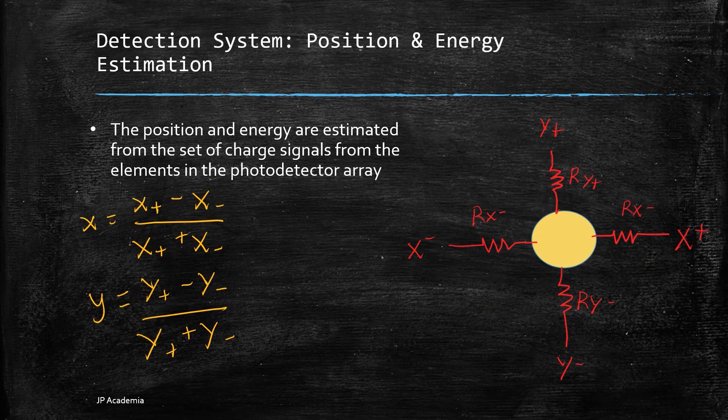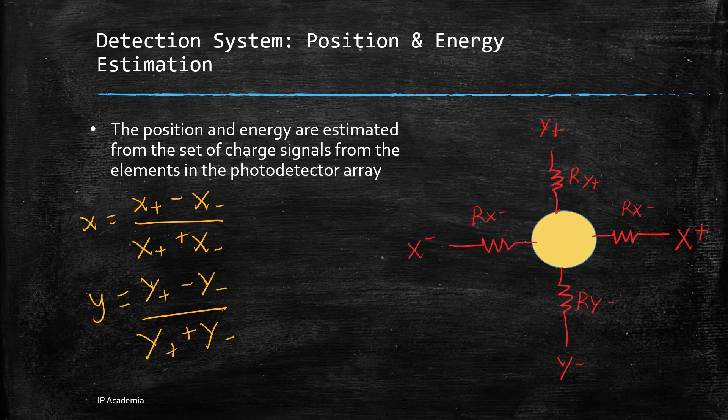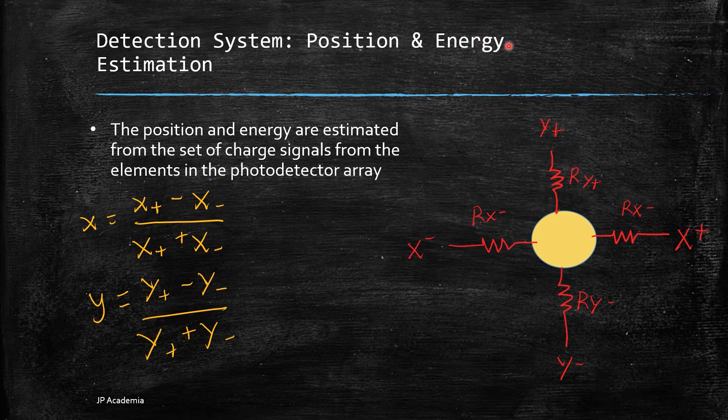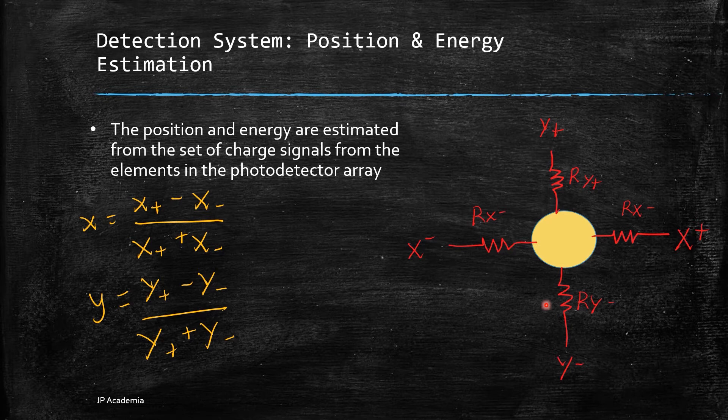Now let's talk about position and energy estimation in the detection system of gamma camera. The goal of the radiation detector is to provide an estimate of the energy and interaction position of each gamma ray incident on the detector. We have this resistive network used to implement the position estimation. Let's say we have a single photomultiplier tube here, PMT.